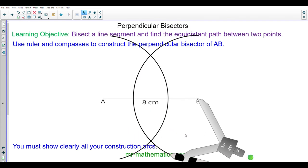You can see the two arcs intersect and I'm going to draw a line segment between these two intersecting arcs. So I start at the top and I work my way to the other intersection.